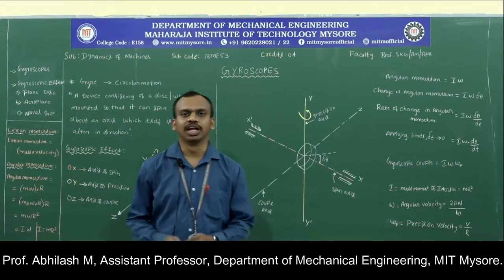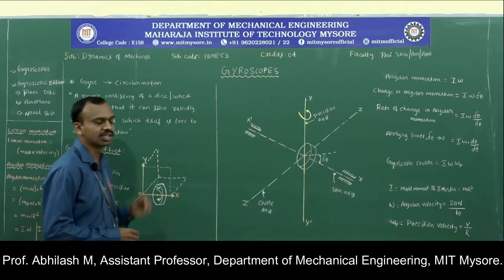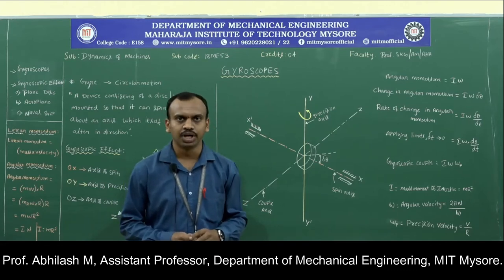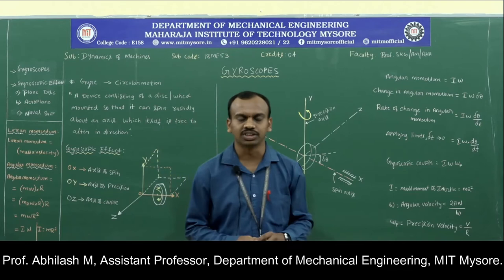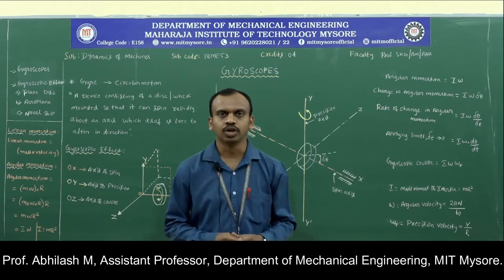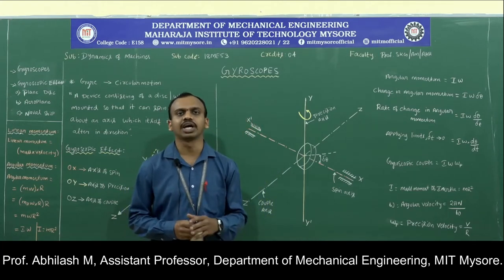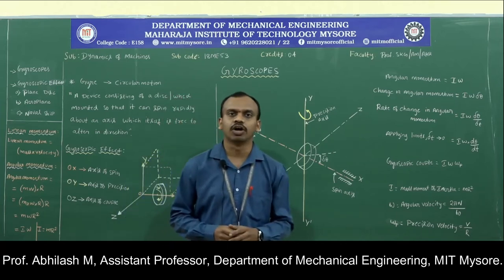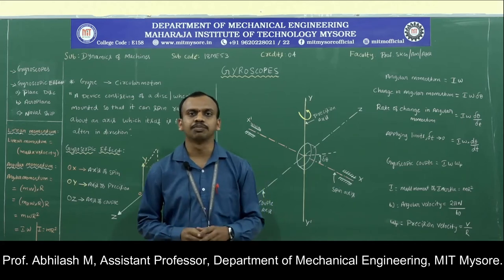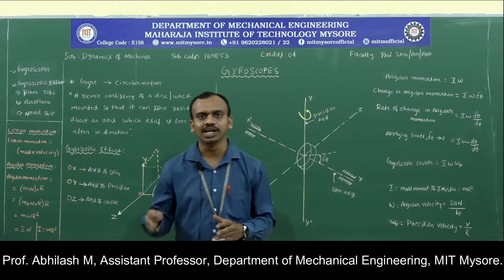Welcome to this lecture session on Dynamics of Machines. So far in Module 1, covering Governors and Gyroscope, you have learned the concepts of Governors from Professor Abhishek sir and Professor Santosh sir. You have seen two different types of Governors: the Gravity or Deadweight controlled Governor, and the Spring controlled Governor. Typical examples were the Porter Governor and the Hartnell Governor.